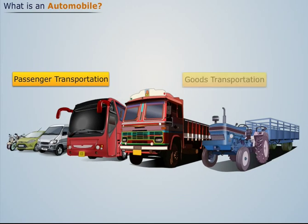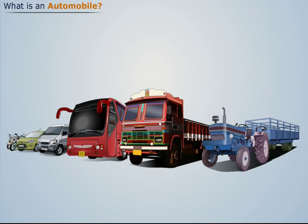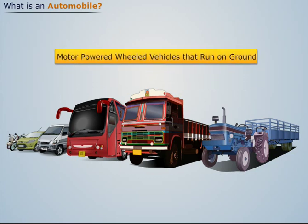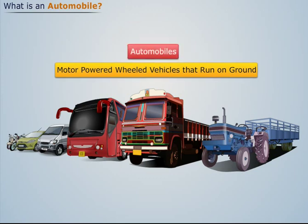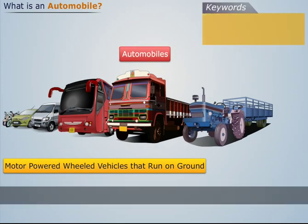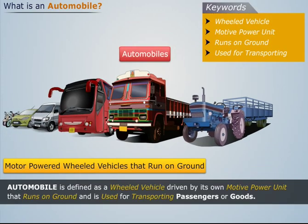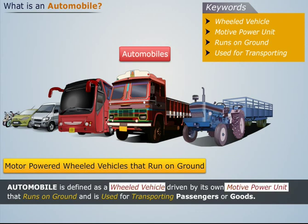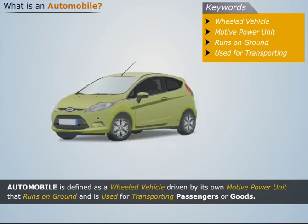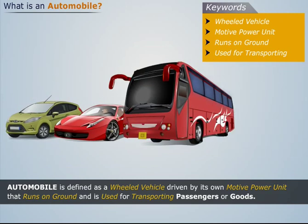All these vehicles are motor-powered wheeled vehicles that run on ground. Such vehicles are known as automobiles. Thus, an automobile is defined as a wheeled vehicle driven by its own motive power unit that runs on ground and is used for transporting passengers or goods.